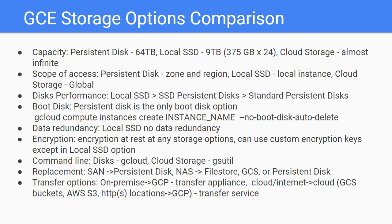The last topic is how to transfer data to GCP. You can use online transfer to move data to Google Cloud Storage via the network. For big data transfer such as from on-premise to GCP, choose Transfer Appliance. For cloud-to-cloud transfers — such as between Google Cloud Storage buckets, from AWS S3 to GCS, or from HTTPS locations to GCP — choose Transfer Service.